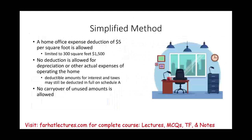Under the simplified method, you don't need to track detailed expenses. You are allowed $5 per square foot, limited to 300 square feet — a maximum deduction of $1,500. No deduction is allowed for depreciation or actual expenses. This also frees up mortgage interest and taxes to be deducted on Schedule A, and there is no carryover of any unused depreciation.